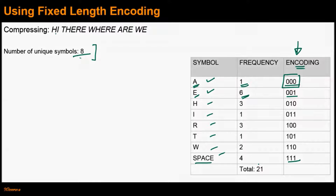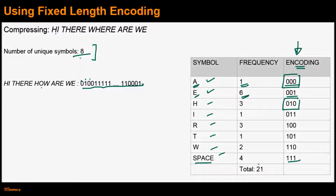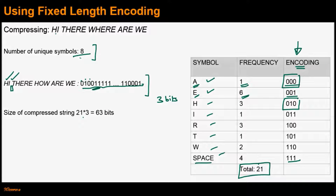Using this fixed-length encoding scheme, the input text would be represented by a bit stream. The first three bits represent the character H, the next three bits represent character I, the next three bits represent character space, and so on. Since each symbol is represented by three bits and there are 21 symbols in total, the length of this bit stream would be 63 bits.